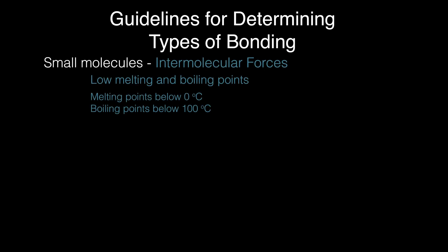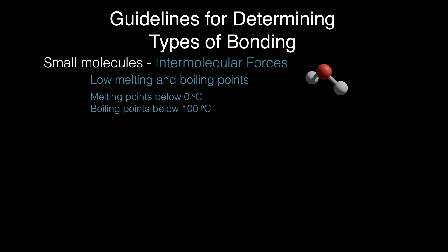Here are some rules of thumb to help you identify what type of structure and bonding you are looking at. These are guidelines only — there are exceptions to every rule — but exam questions on this topic won't be looking to trip you up. Small molecules, held together by weak intermolecular forces, tend to have low or very low melting and boiling points. Most of these substances will melt long before 0 degrees centigrade and will boil at less than 100 degrees centigrade.